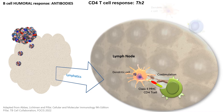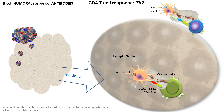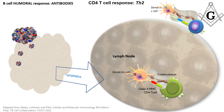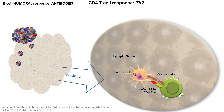The co-stimulatory signal is very specific — I have a separate video on this. There are different antigens, like another one depicted here in blue, representing a different kind of danger signal that requires a different co-stimulatory signal. Notice that I place the hands differently, showing that it is a different signal. This is what tells the T-cell to differentiate into a Th2 via the production of interleukin-4.